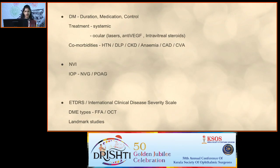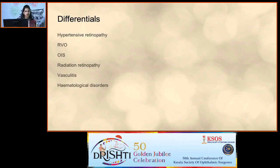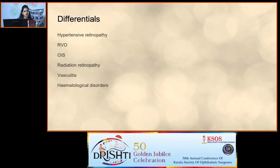If the pupil is mid-dilated — as some diabetics have pupillopathy — you may detect NVI on slit lamp. Check intraocular pressure for co-existent primary open-angle glaucoma or neovascular glaucoma. Know the ETDRS classification and the international clinical disease severity scale for diabetic retinopathy. Grade DME according to FFA, OCT, and landmark studies such as the UKPDS. Differentials for diabetic retinopathy include hypertensive retinopathy, vascular occlusion, ocular ischemic syndrome, radiation retinopathy, vasculitis, and hematological disorders.